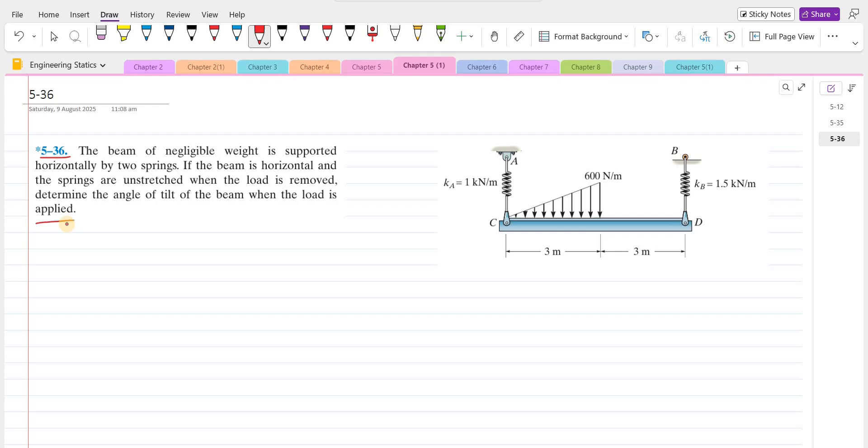So to solve this problem, first of all, we have to draw the free body diagram. So the beam is supported by these spring forces. Let's label them first. Let's call this spring force as F A and this one as F B. We also have to find the resultant of this triangular distributed loading.